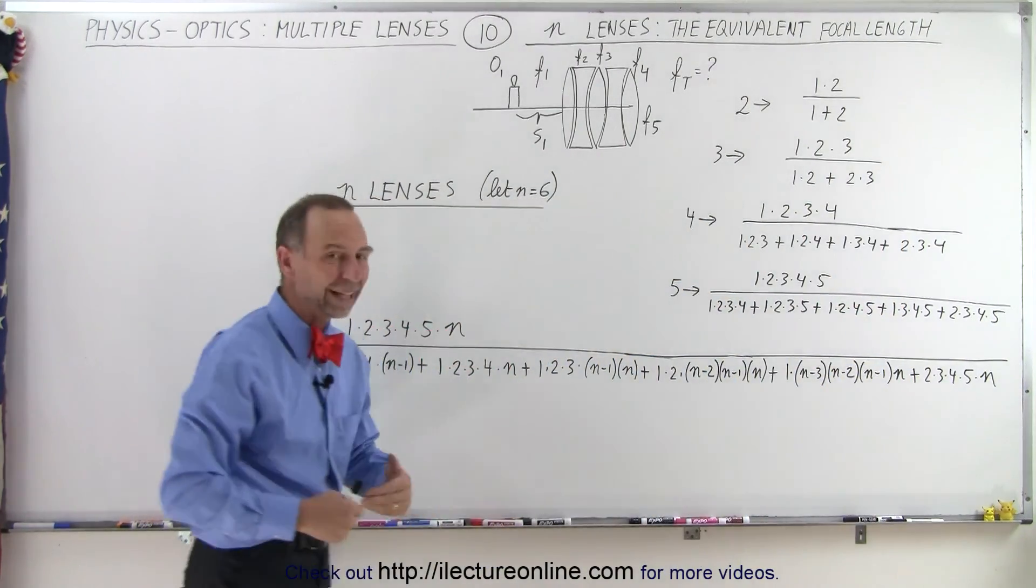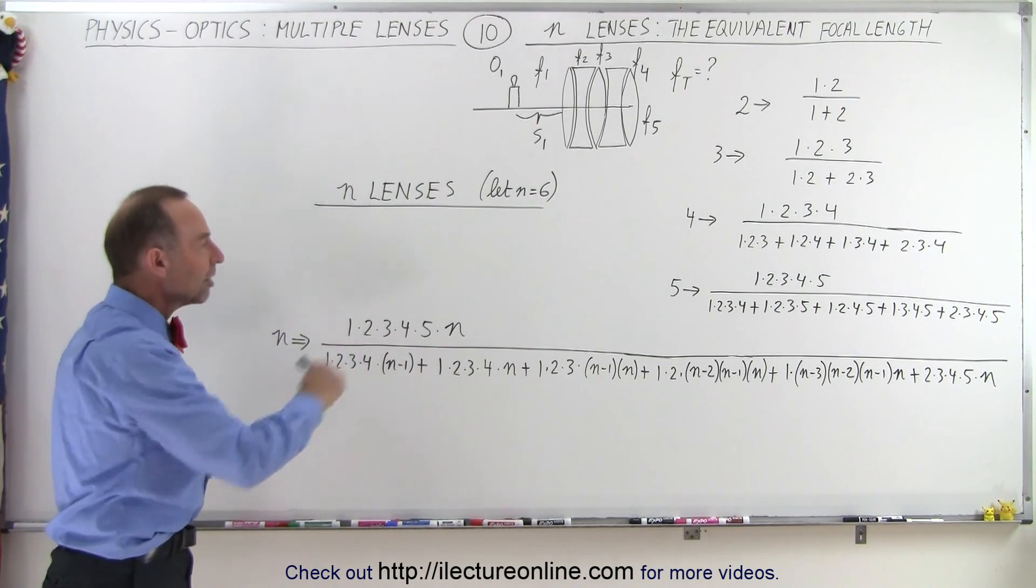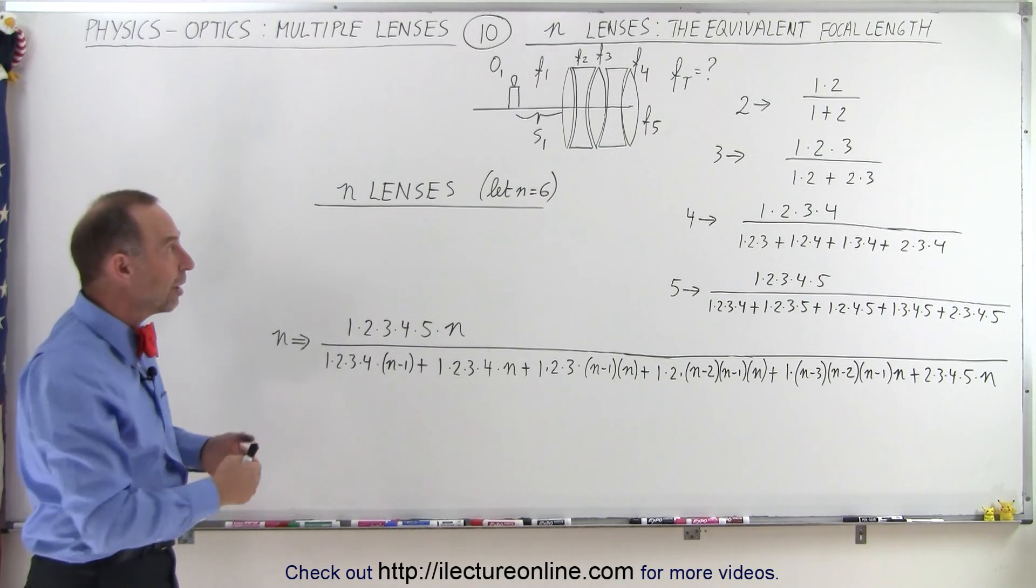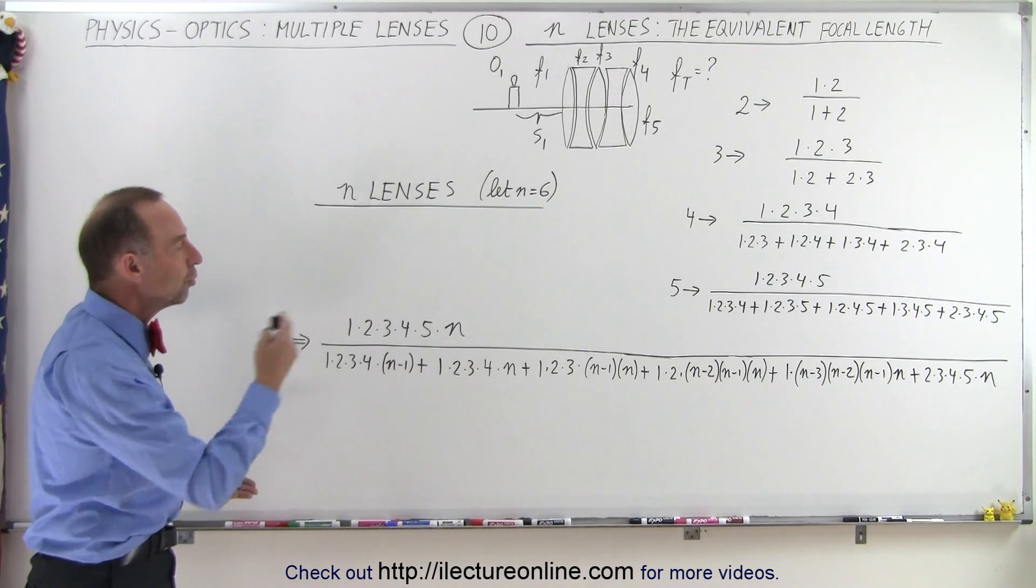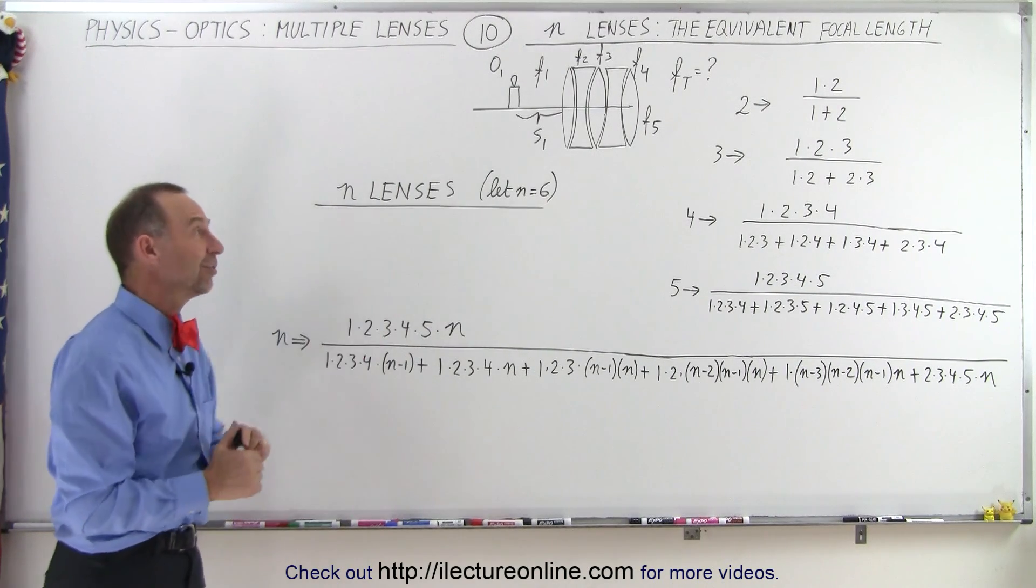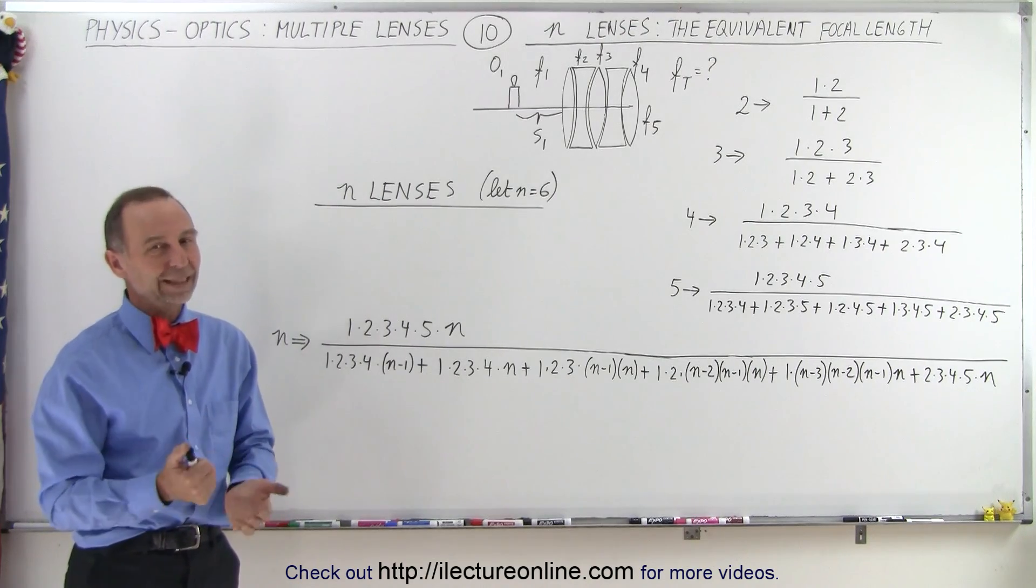So that's the pattern in which you increase the numerator and the denominator in such a way that you can find the equivalent focal length of any number of lenses using this pattern right here. Hopefully you don't have to go to too many lenses together, but at least this is how you would do it for a multi-lens system. And that's how it's done.